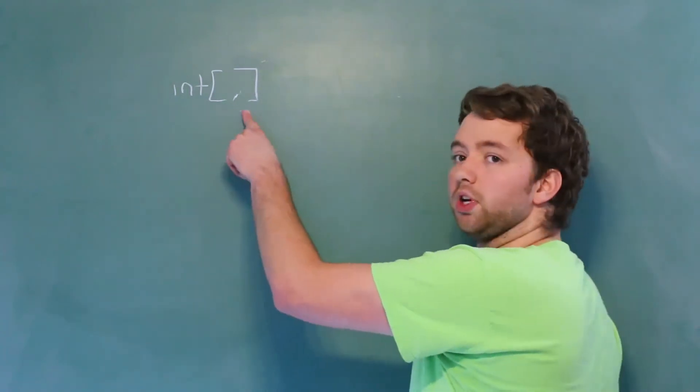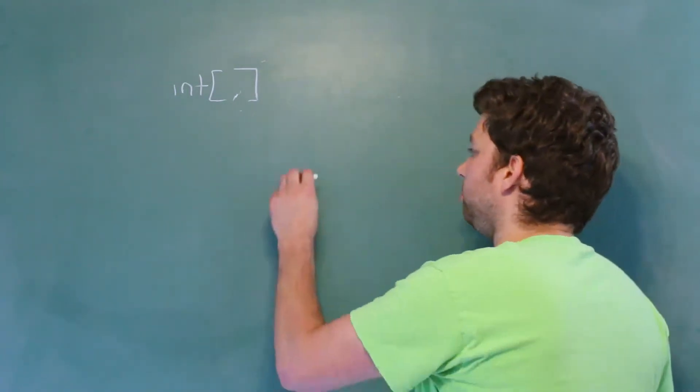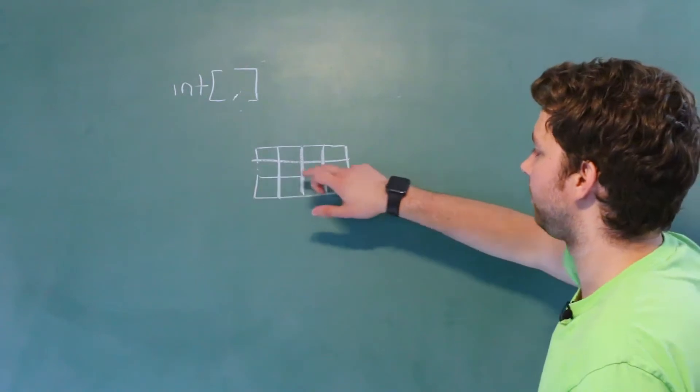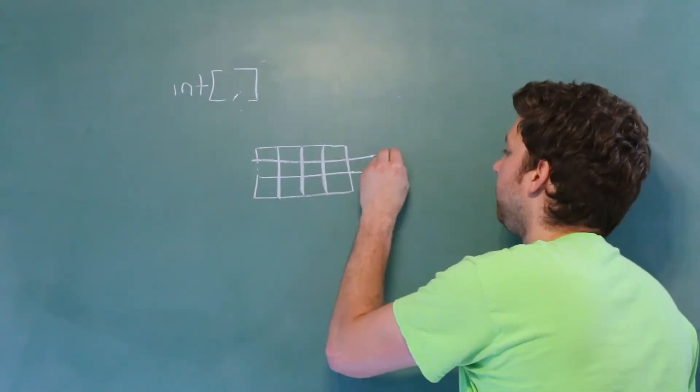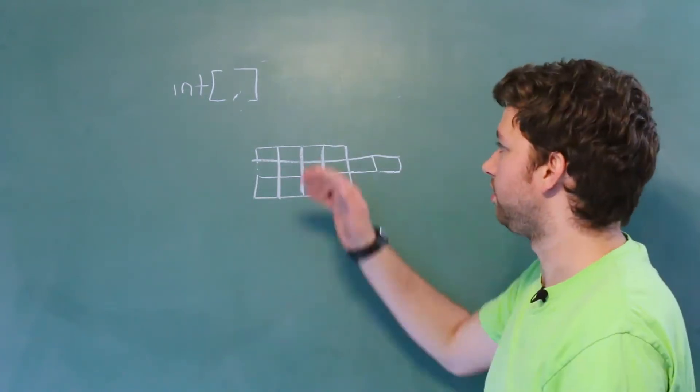Now the thing to know when you're working with a 2D array here: you can't have arrays of different sizes. So for example, if for the second row you wanted to have an additional column, you cannot do that with this structure here.